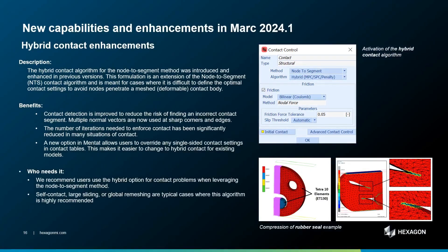The last improvement I would like to highlight in this video is around contact. The hybrid contact option for the node-to-segment method has been introduced and enhanced over the last few versions of MARC. Hybrid contact is useful for cases where it is difficult to define the optimal contact settings to avoid nodes penetrating a meshed deformable contact body. Some improvements have been made for this release: contact detection is improved to reduce the risk of finding an incorrect contact segment, the running time is improved in many situations, and a new option in Mentat allows you to override any single-sided contact settings in contact tables, making the change to hybrid contact for existing models easier.